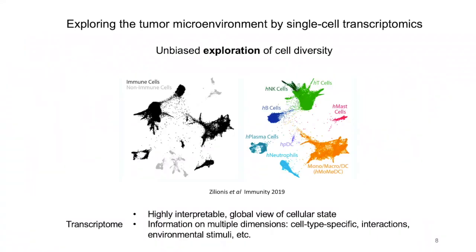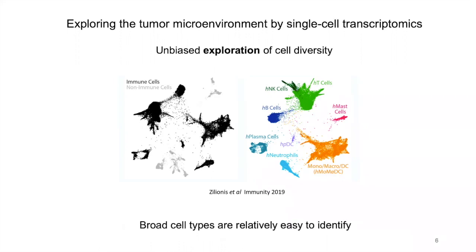In the past 10 years, single-cell transcriptomics has allowed us to explore cell diversity at high resolution and throughput. These technologies are transforming the way in which we study human disease. For example, here we are looking at the low-dimensional representation of the tumor microenvironment. While it is relatively easy to discriminate cell types broadly speaking, such as T cells, B cells, and dendritic cells, by looking at their gene expression profiles, when we start looking into the diversity within each cell type — for example, T cells — it becomes much more difficult to characterize discrete cell states.